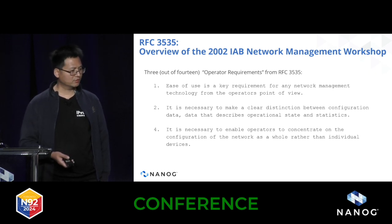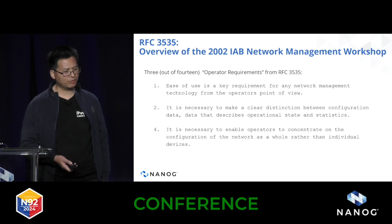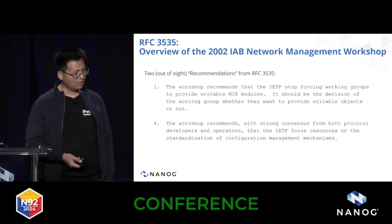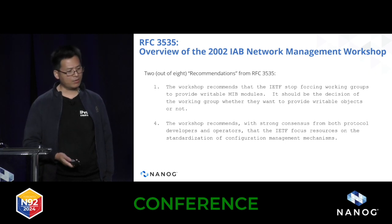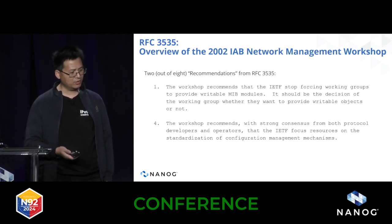The third requirement is allowing operators to focus on the configuration of the network as a whole instead of individual devices — this is actually a milestone driving the move from manual provisioning to network management automation. Regarding recommendations, two stand out: first, due to the lack of network programmability and openness in SNMP, the IETF discouraged publishing writable MIB modules, making it a working group decision whether to provide writable objects. The second recommendation — which built strong consensus for both protocol developers and operators — was that the IETF should invest more resources in standardizing configuration management mechanisms, leading to the development of new network protocols.